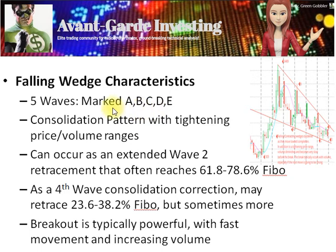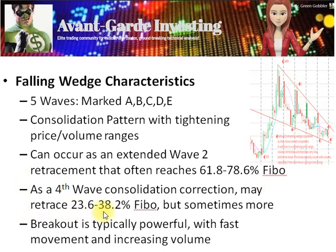Price and volume ranges consolidate, and the pattern can occur as an extended wave 2 retracement that often reaches 61.8–78.6% Fibonacci, or as a fourth wave consolidation correction which may retrace 23.6–38.2% Fibonacci, but sometimes more.